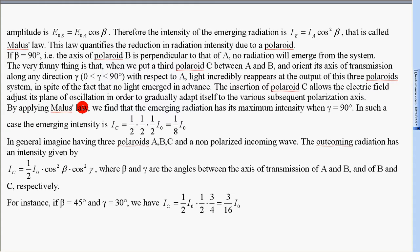By applying Malus's law, we find that the emerging radiation has its maximum intensity when gamma is equal to 90 degrees. In such a case, the emerging intensity is Ic equal to 1/2 times 1/2 times 1/2 I0, that is 1/8 I0.